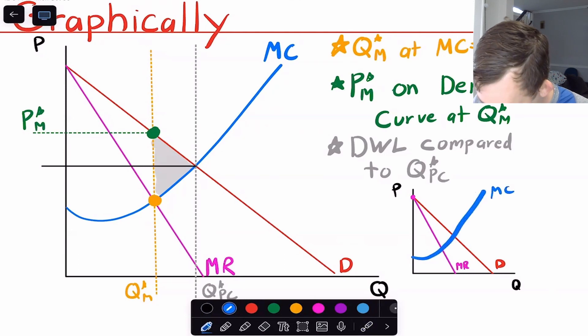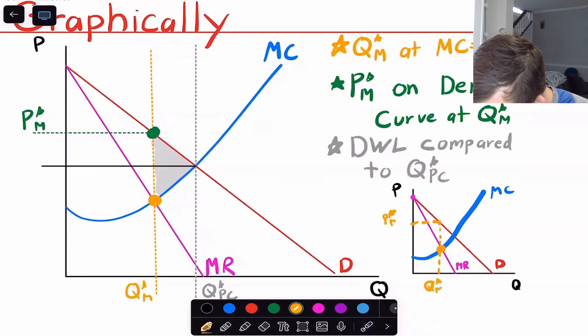And so what we're going to do to find the monopoly quantity is we're going to find where marginal revenue equals marginal cost. So that's right here. We're going to follow that straight up to the demand curve. And then we're going to go straight over to the y-axis. And that's going to tell us our P star in monopoly setting. And again, this orange dot is going to tell us the Q star in monopoly.